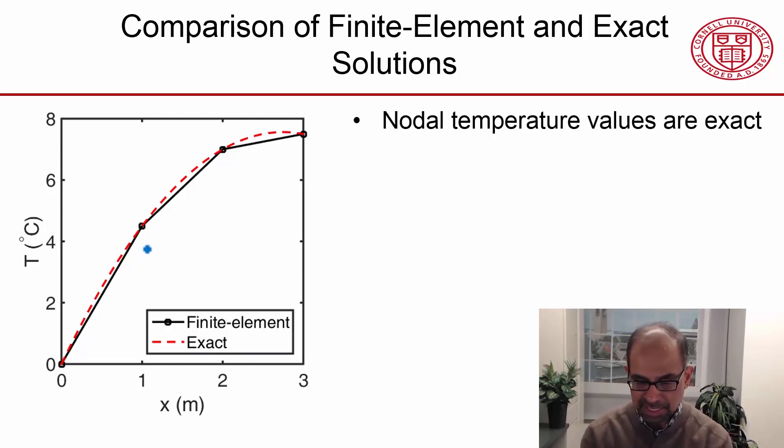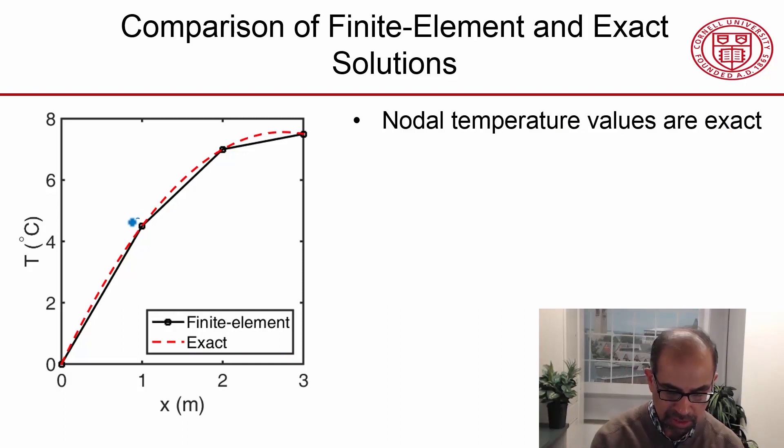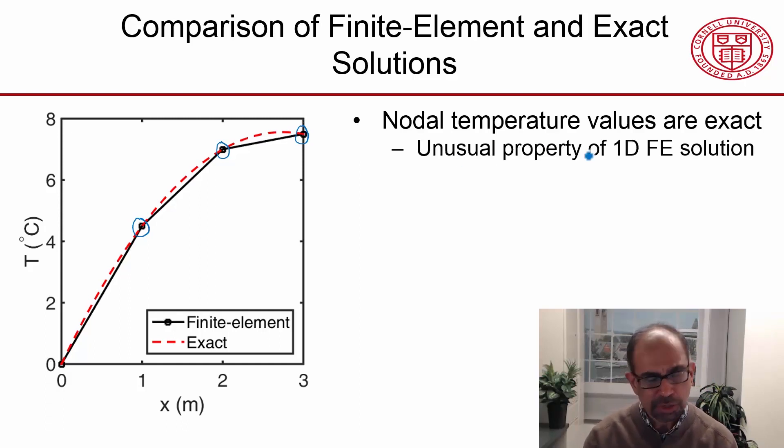We see that the nodal temperature values are exact. If I look at this nodal temperature value, this nodal temperature value, and this nodal temperature value, they match exactly with the exact solution. That turns out to be an unusual property of the 1D finite element solution, and you won't get this to be the case for 2D problems and more complicated problems.